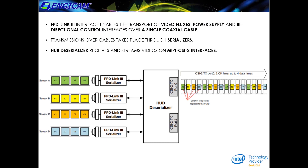FPLink3 also permits embedding a bidirectional communication channel and the power supply for endpoints.